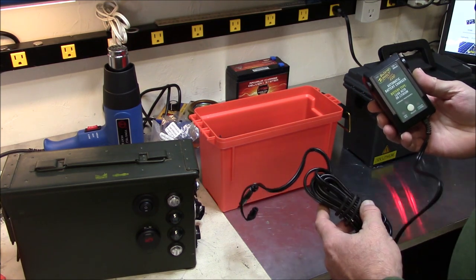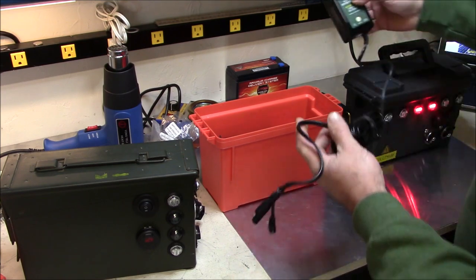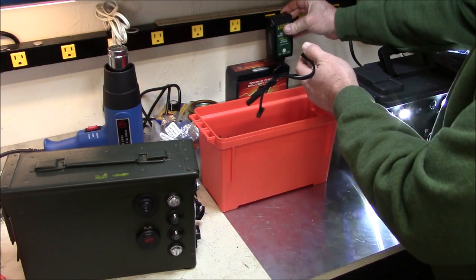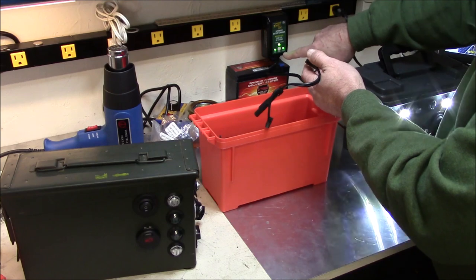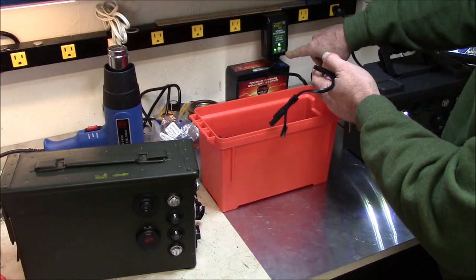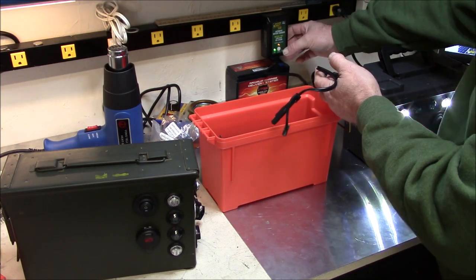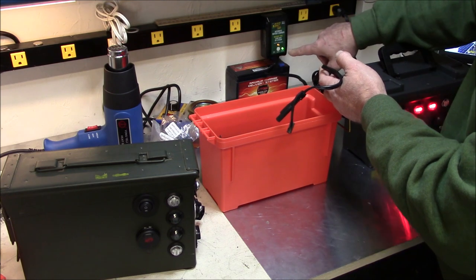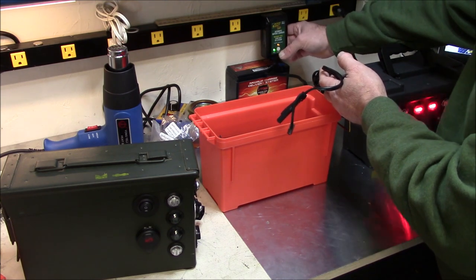But what I'll show you is this new Battery Tender Junior 800 I got. It's a dual-purpose one, it does lead acid battery or lithium. So you plug it in, there's a button there, lead acid is on the left, lithium is on the right.